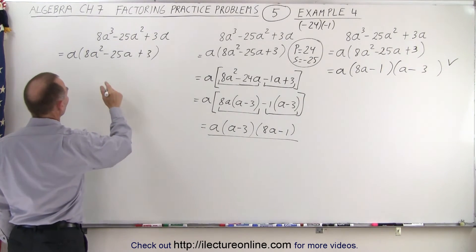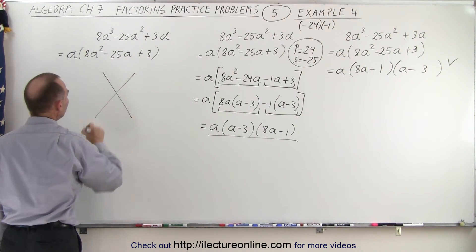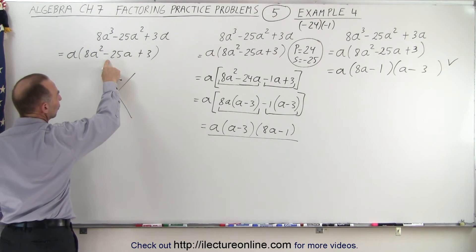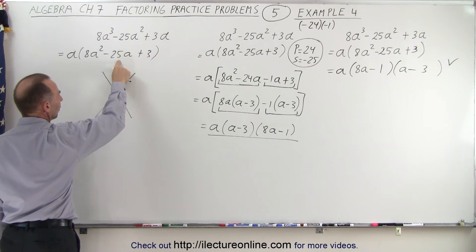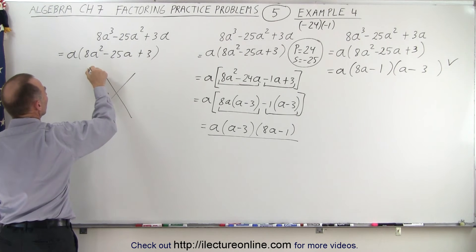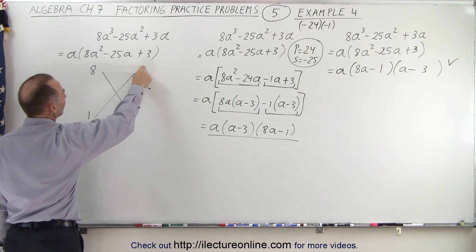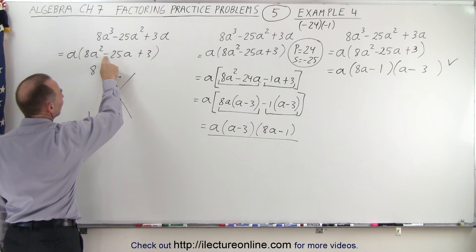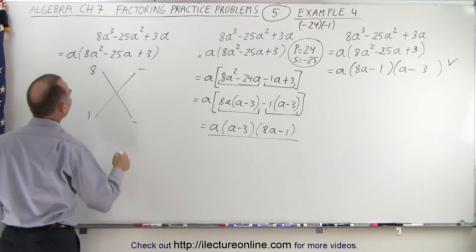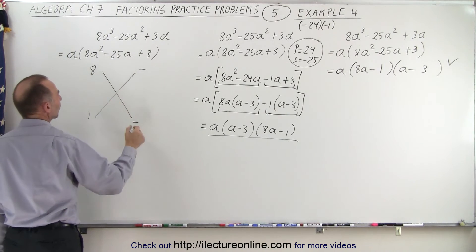Here we're going to use the FOIL method. And again, we can think a little bit ahead, knowing we have a very big middle term, which means that I probably want to have an 8 and a 1. And over here, I want to have, since I have a negative sign here and a positive sign, these two numbers must be negative. And I need as big a number as possible.